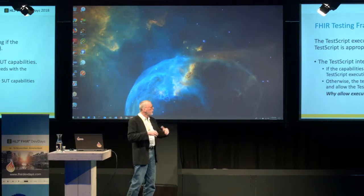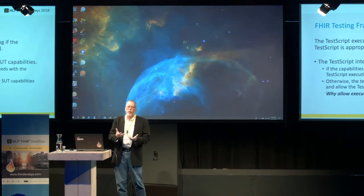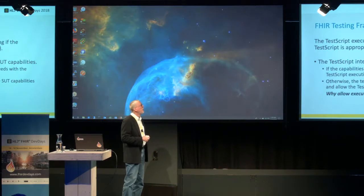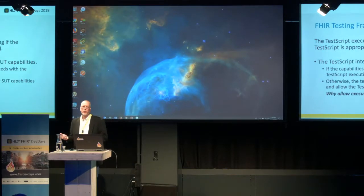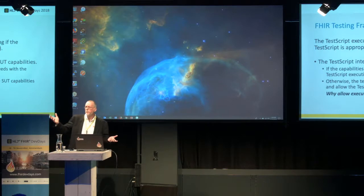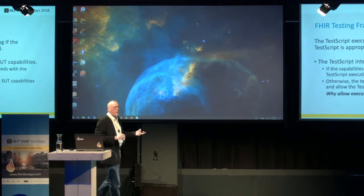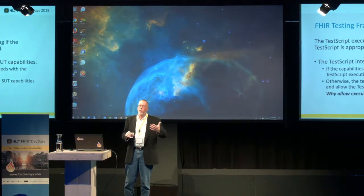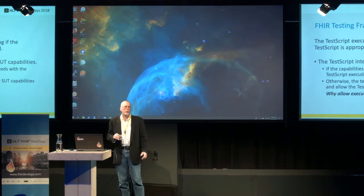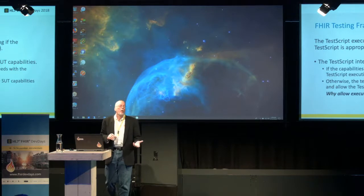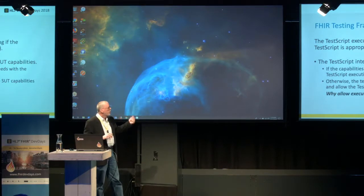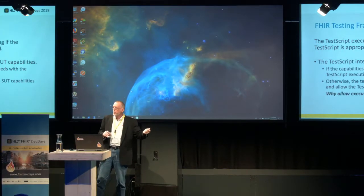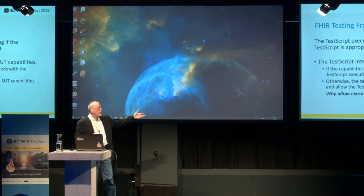In pre-processing, the test engine evaluates the TestScript against the system under test, based on the system's capabilities. How do we know what those capabilities are? The capability statement. Every FHIR system must present a capability statement — that's part of the specification. We can leverage that and evaluate it against the TestScript and the operations to be performed. If the capabilities match what we're testing, no problem — keep going. But if there's a mismatch, the specification allows the test engine to skip that test, or you can elect to continue execution.